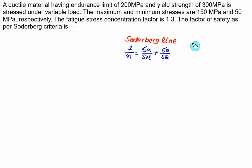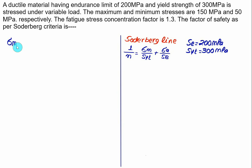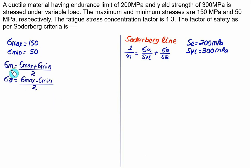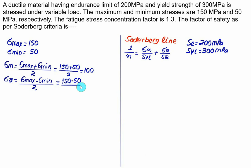The value of endurance limit SE is equal to 200 MPa, and SYT is given as 300 MPa. Sigma max is 150 MPa and sigma minimum is 50 MPa. The mean stress is sigma max plus sigma min divided by 2, that is 150 plus 50 equals 200 divided by 2, which equals 100 MPa. The amplitude stress is sigma max minus sigma min divided by 2, which is 150 minus 50 equals 100 divided by 2, equal to 50 MPa.